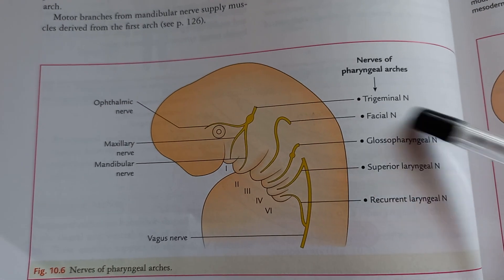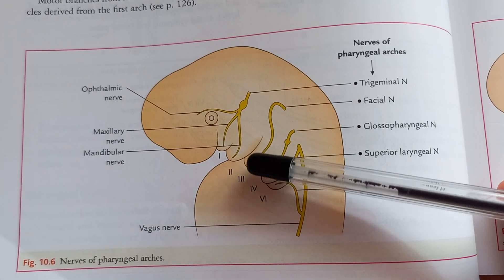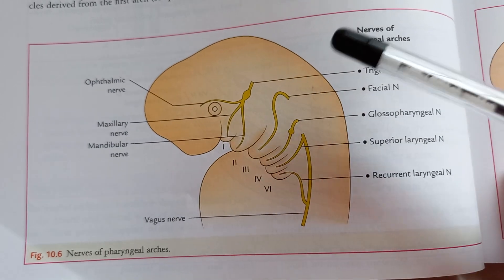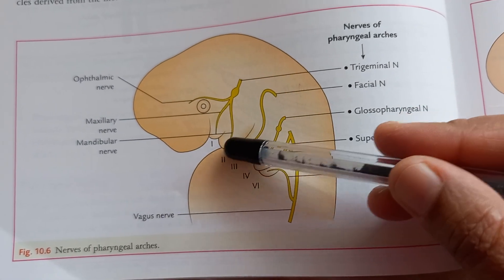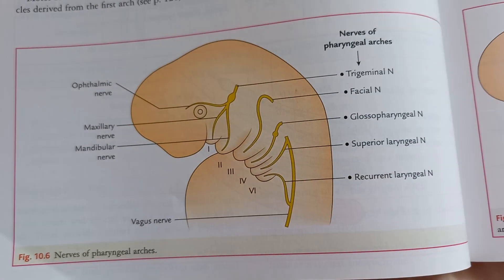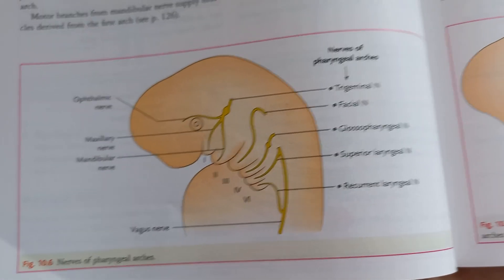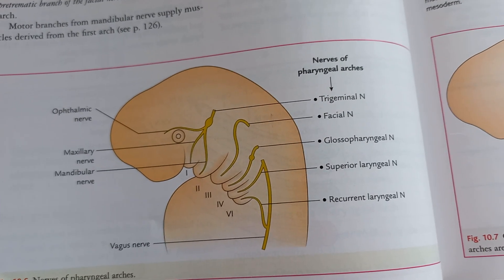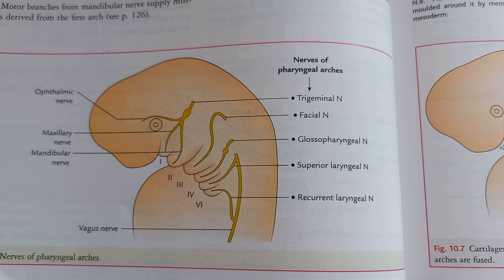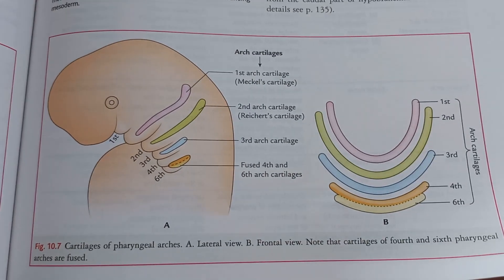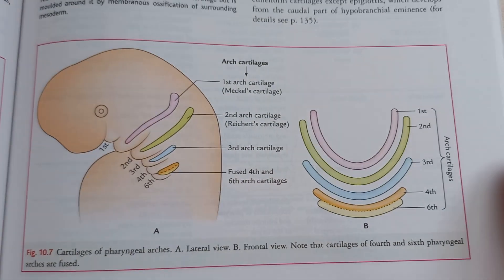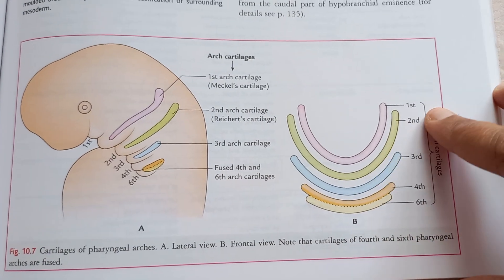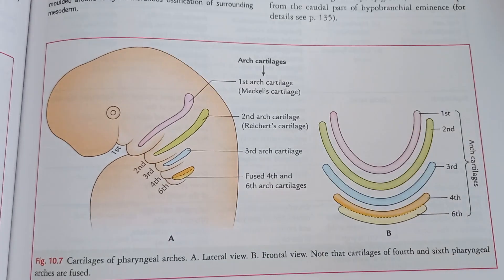This section on pharyngeal arches is very important. See the second arch here — the nerve of the second arch is the facial nerve, the seventh cranial nerve. So you should know the nerves of the arches. They're also showing the cartilage of the arches; this is the second arch cartilage.